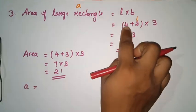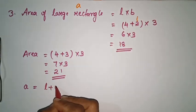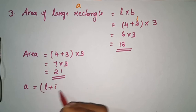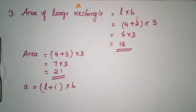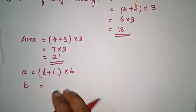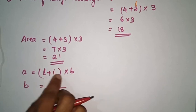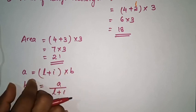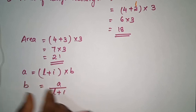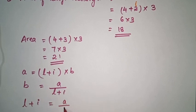A is equal to the new length multiplied by the breadth. The new length is L plus I. So A is equal to (L plus I) into B. That gives us the area of the enlarged rectangle.